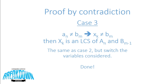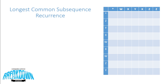We've proven that the longest common subsequence problem portrays the property of optimal substructure. Now let's walk through an example using the recurrence. When considering the recursive formula for this problem, we can define C of I and J to be the longest common subsequence for A to I and B to J — that is, up to the I-th character of A and the J-th character of B.